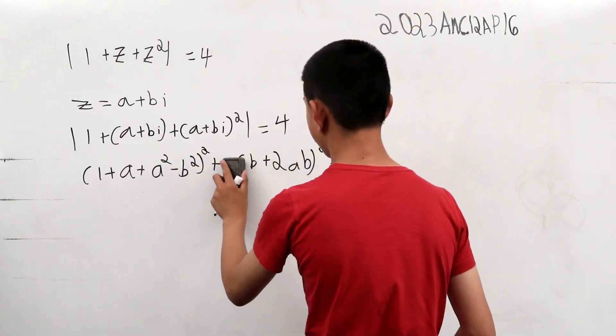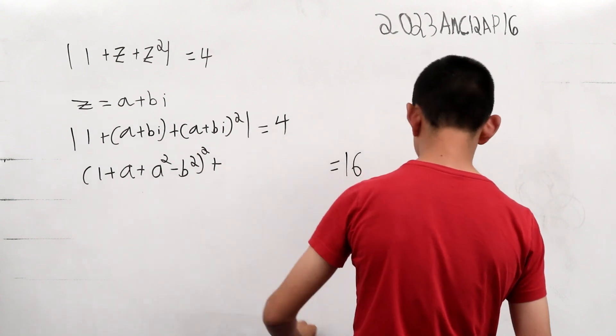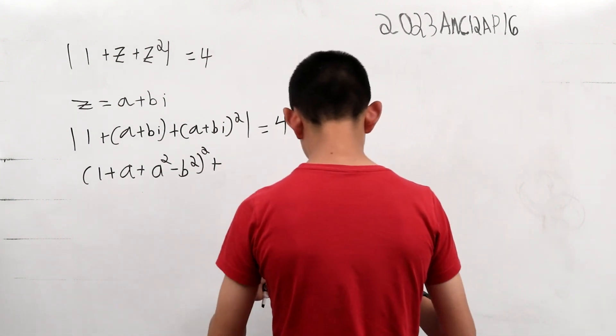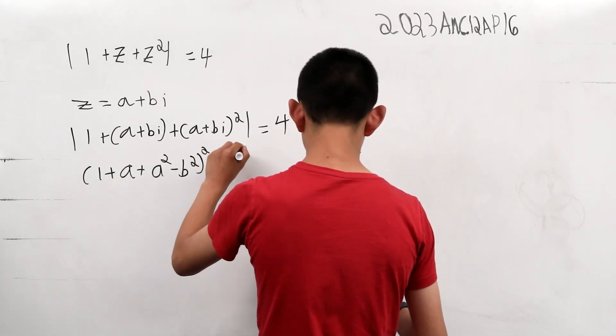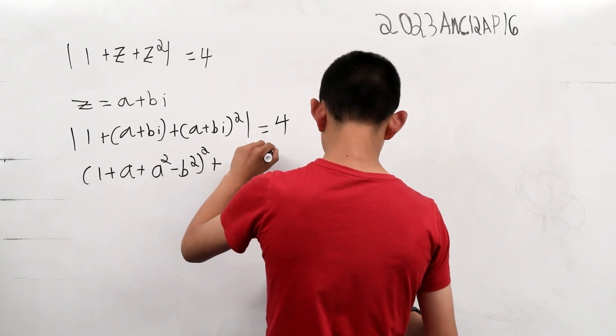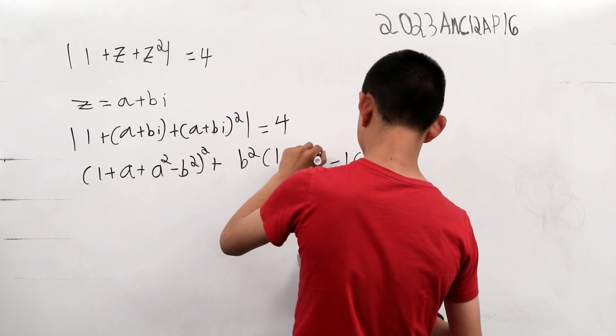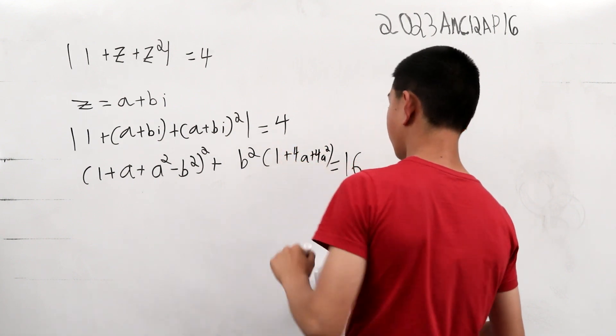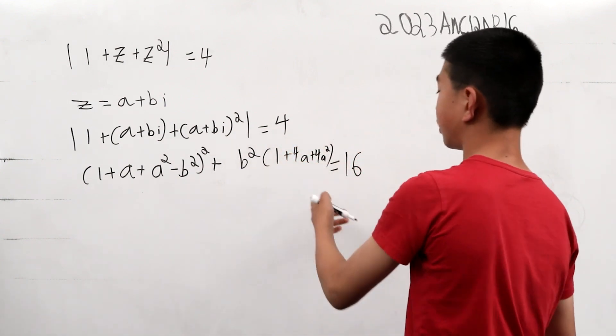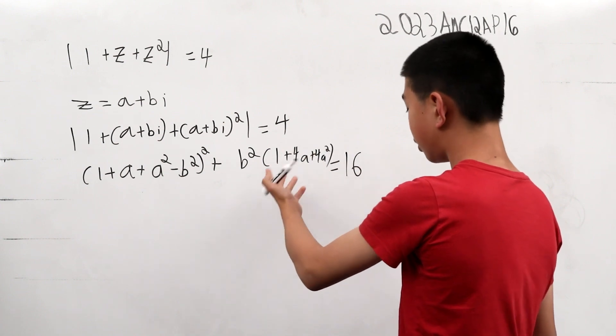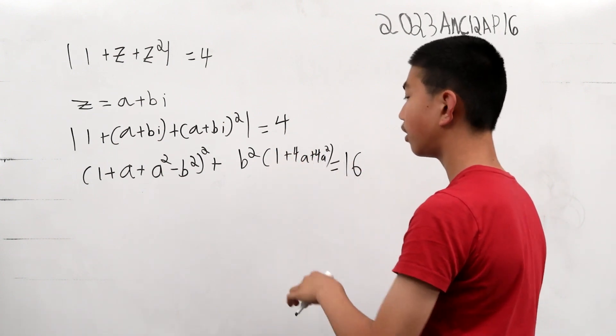But this equation is not the same because we can factor it into something that's a lot easier to compute. This is b squared times 1 plus 4a plus 4a squared, and this breaks it down into two good chunks that we can solve.